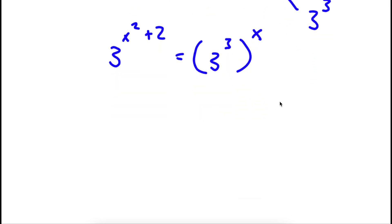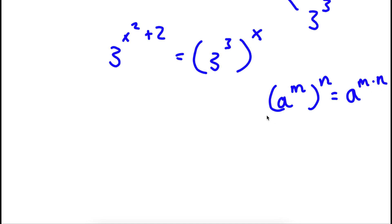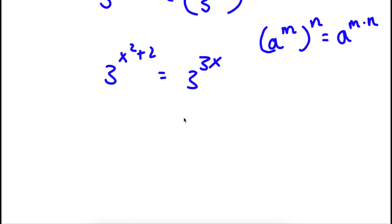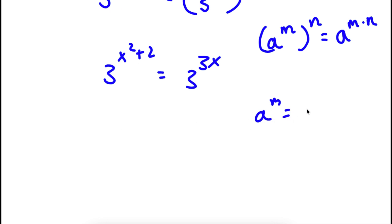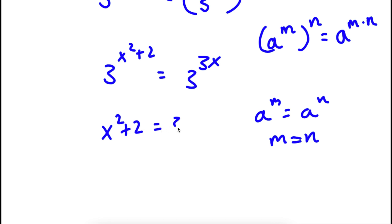Now, if I have something in the form a to the power of m to the power of n, this is equal to a to the power of m times n. So in this case, 3 to the power of 3 to the power of x becomes 3 to the power of 3x. And since the bases are equal, this means that x squared plus 2 is equal to 3x.